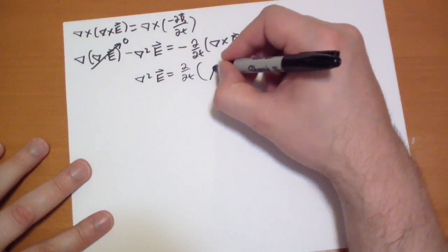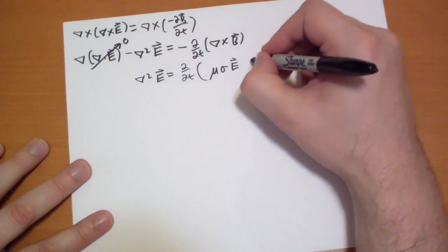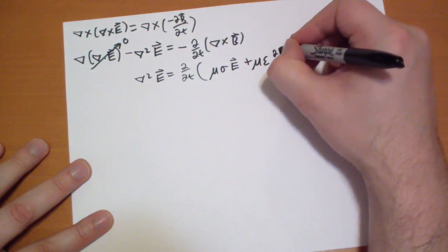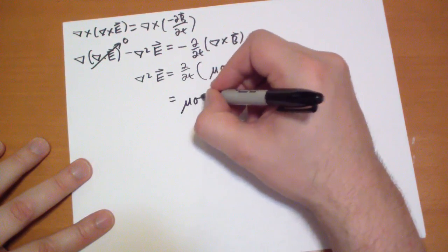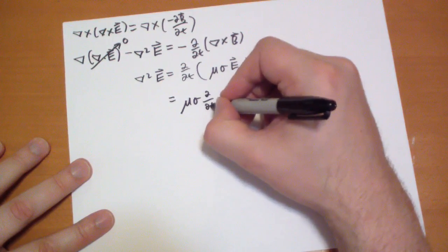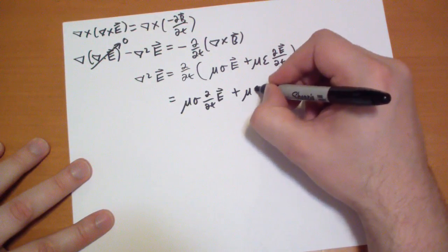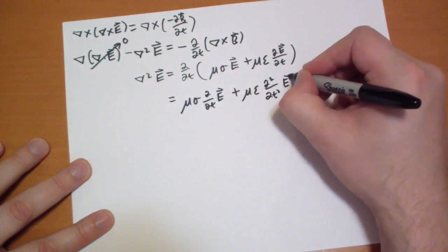Well what's the curl of the B field? That's just mu sigma E there's that current plus mu epsilon d of E by dt. So it's mu sigma d by dt of E plus mu epsilon d squared by dt squared of the E field. Okay?